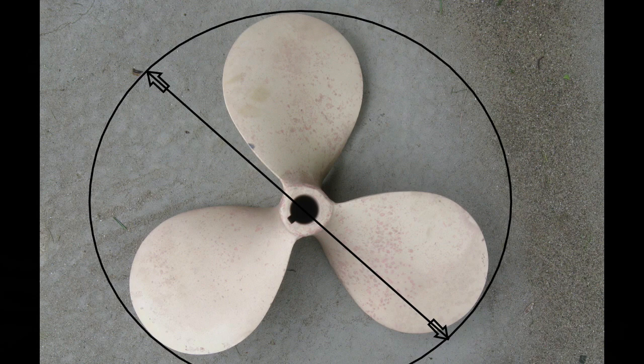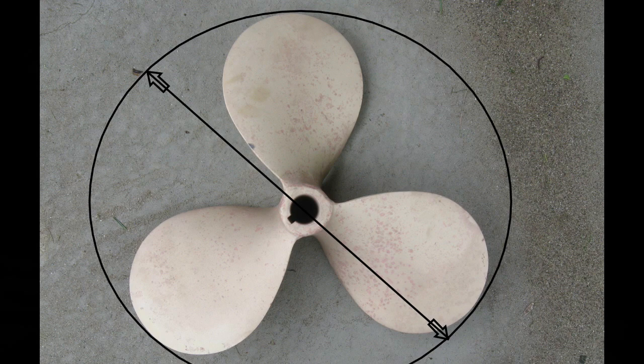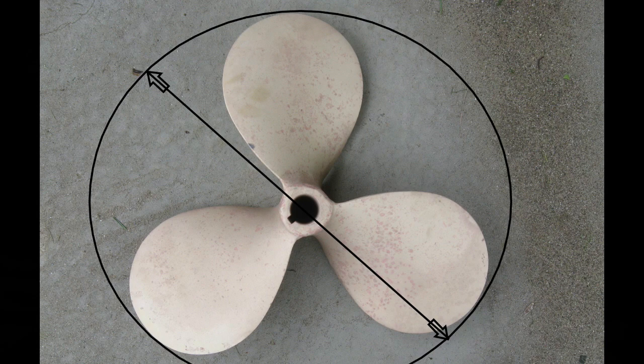This diagram also illustrates another aspect of a propeller and that is what's called the disc area ratio. If we were to measure the area of each of the propeller blades and sum them up and then divide that by the area of the circle with the diameter of the propeller, that ratio would be the disc area ratio.